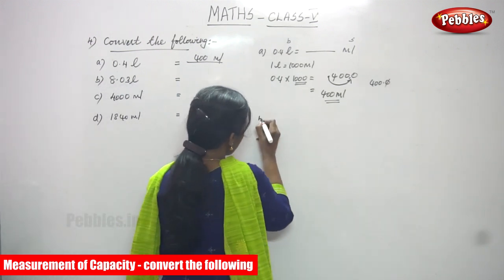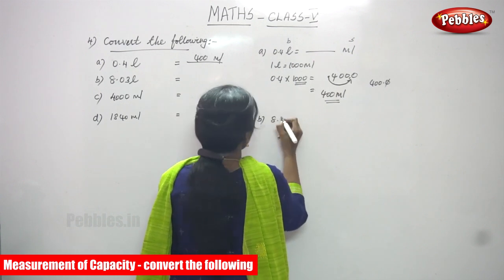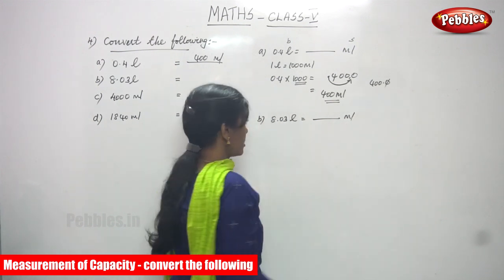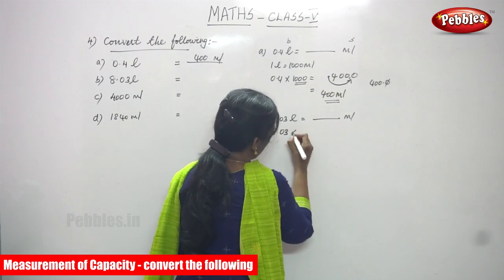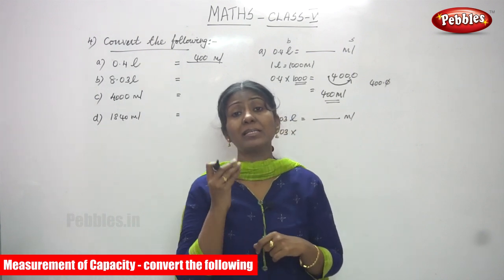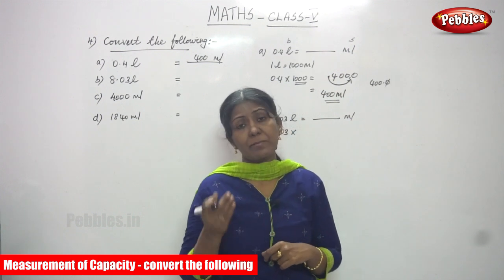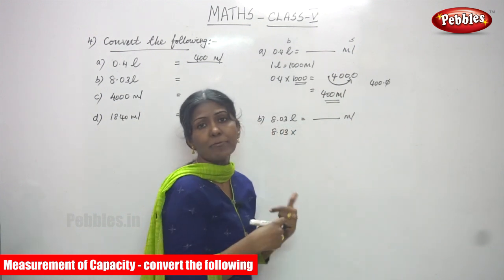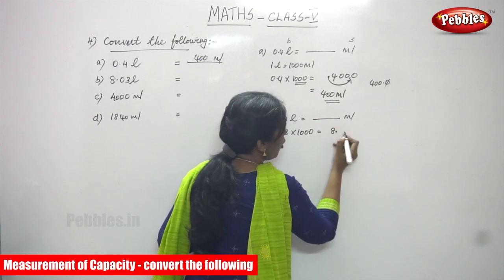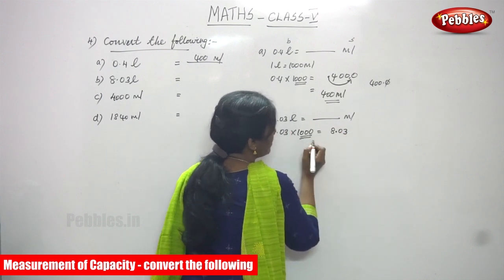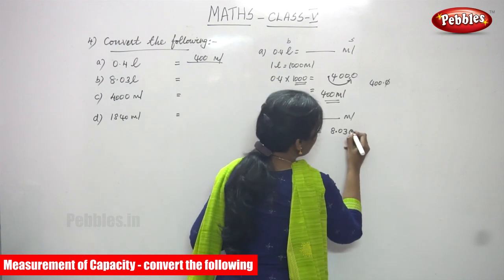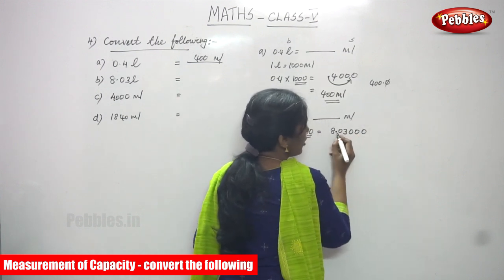Next question: 8.03 liters is equal to how many milliliters? Since liter is a bigger unit and milliliter is a smaller unit, converting bigger to smaller means multiply by 1000. So: 8.03 into 1000. Write 8.03 then three zeros, because 1000 has three zeros. Now move the decimal point three places to the right.